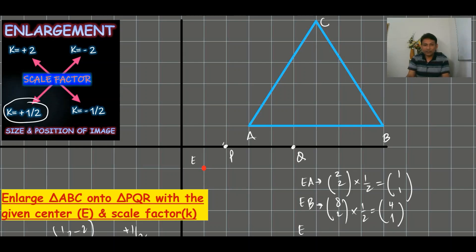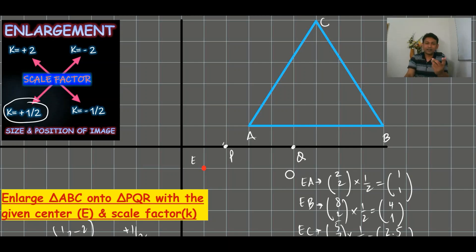Third point: E to C. The column vector from E to C is (5, 7). Multiplying by one-half: five-half is 2.5, and seven-half is 3.5. So the position of R is (2.5, 3.5) from the center. Answers in decimals are possible. When I join these three points, we have the image triangle.